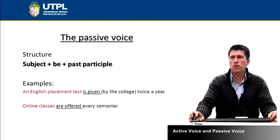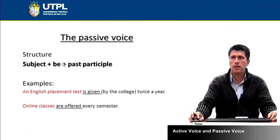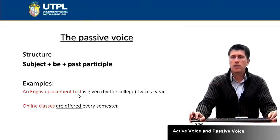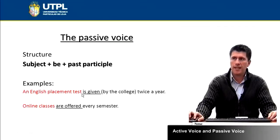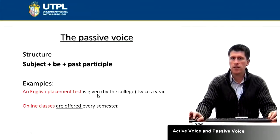For the passive voice, the structure is going to change a little bit. You're going to have the subject, plus be, plus the past participle. For example: 'An English placement test is given by the college twice a year.' The subject is an English placement test, be becomes is in this sentence, and the verb in the past participle is given.